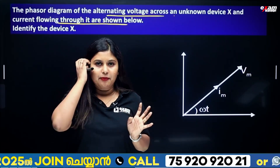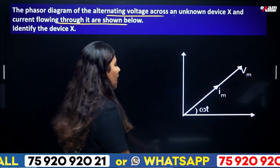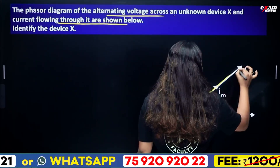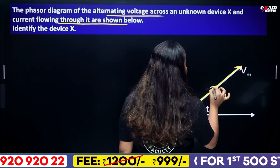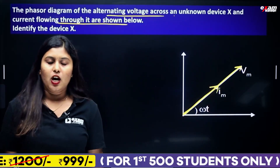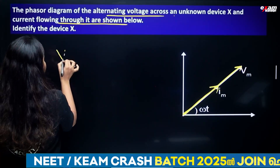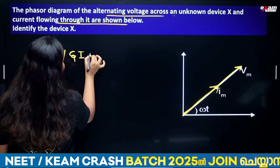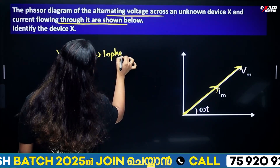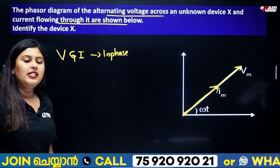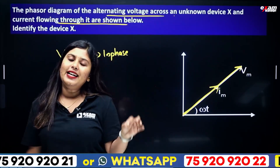We will look at the voltage here in terms of ωt. The voltage is at the same time as the current, and the phase difference is zero.